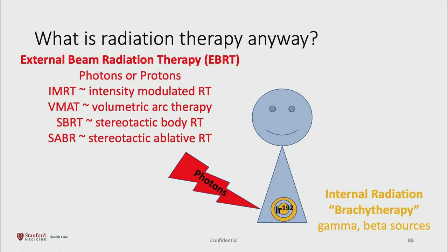There are many different terms — mostly technical — that refer to the way radiation is delivered, and you may come across them when reading about prostate cancer online. Internal radiation, also called brachytherapy, is delivered with a small radioactive source or sources depending on the type of brachytherapy performed. This involves placing the source inside the area to be treated — in this case, the prostate.